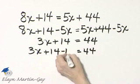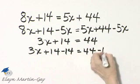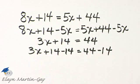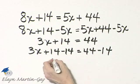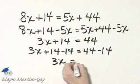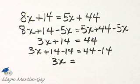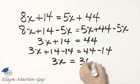Now I'll subtract 14 on the left side, and I must do the exact same thing on the right side. Notice what happens. The left side, I have simply 3x. The right side, 44 minus 14, that is 30.